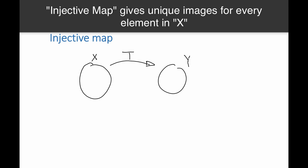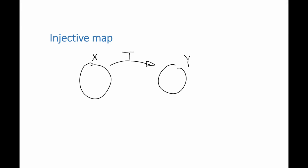An injective map is a map that gives me unique images for every element in x. So this element in x would be mapped to an element in y. And another element in x would have to be mapped to another element in y for this to be an injective map.